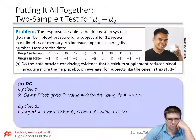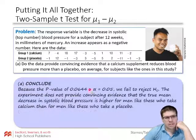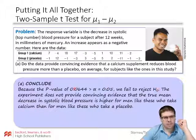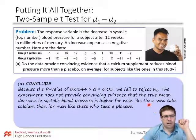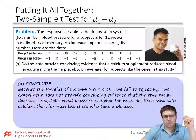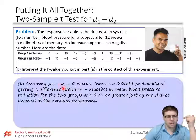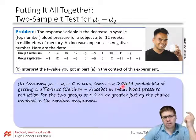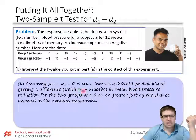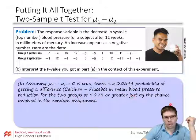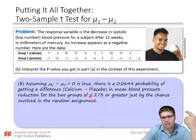Because that p-value of 0.0644 is greater than alpha 0.05, we fail to reject the null hypothesis. The experiment does not provide convincing evidence that the true mean decrease in systolic blood pressure is higher for men like these who take calcium than for men like these who take the placebo. To interpret the p-value: assuming mu_C minus mu_P is actually zero, there is about a 0.0644 probability of getting a difference of 5.273 or greater in mean blood pressure reduction for the two groups just by chance involved in random assignment.